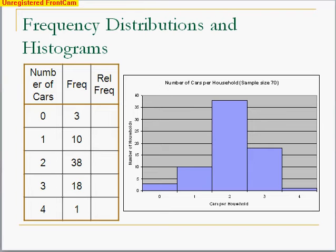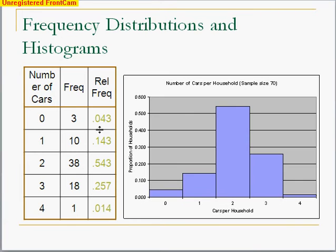It's also called a relative histogram. In a relative histogram, we figure out the relative frequency, which is just the percentages. Remember, there were 70 total people, and we said 3 of them had 0 cars. So 3 out of 70 is about 4%. 10 out of 70 had 1 car, about 14%. 38 out of 70, about 54%, had 2 cars. 18 out of 70, 25% had 3 cars. And 1 out of 70, about 1.4%, had 4 cars.